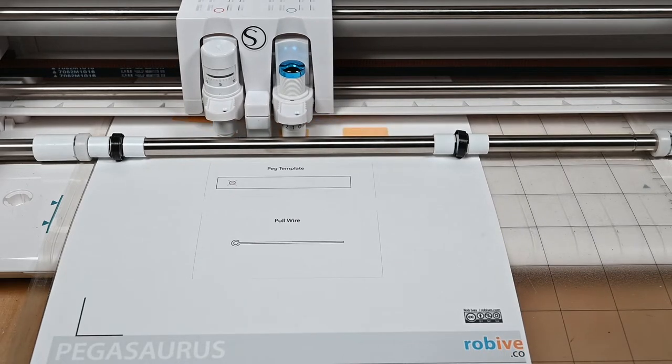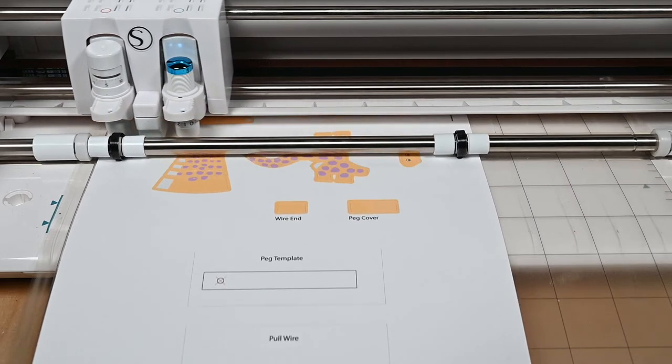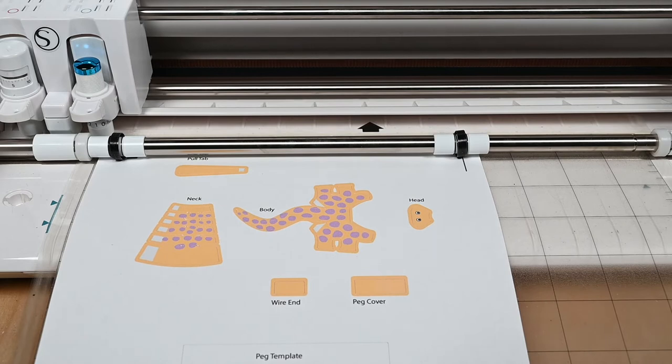So that's one, two, three score lines. There you go. And that's everything complete. That's the cutting done. It's so much easier than using scissors.